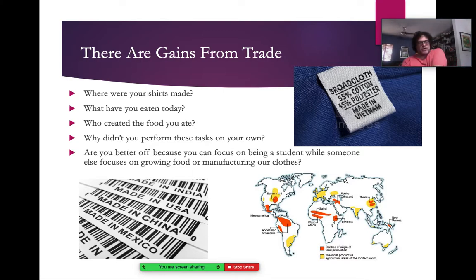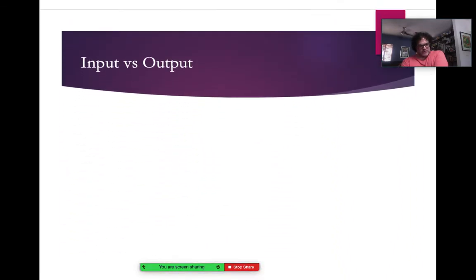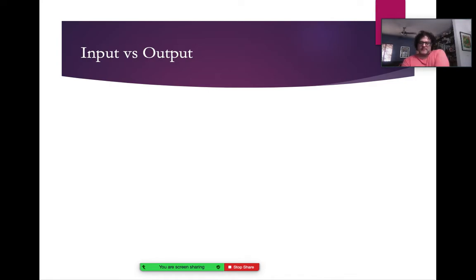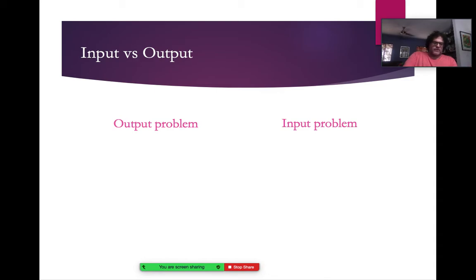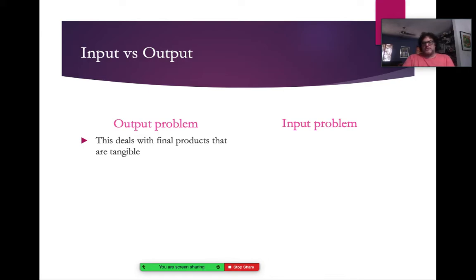Let's look at how we solve comparative advantage problems. There are two types: an input problem and an output problem, and you need to be able to solve both. Output problems are generally more common and very easy to solve. Output problems deal with final products — things that are tangible, things you can get your hands on: cars, boats, beer, wine, wheat, corn, books — you name it.